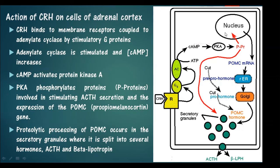Phosphorylation of these proteins increases the transcription of CRH hormone from the nucleus. The pro-opiomelanocortin (POMC) mRNA produced goes into the rough endoplasmic reticulum, where the pre-pro hormone is cut to form the pro hormone. From the rough endoplasmic reticulum, it goes to the Golgi apparatus, where the pro hormone is cut to form the active hormone. The POMC hormone is then packaged into secretory granules, inside which it is split into several hormones like ACTH and beta-lipotropin.